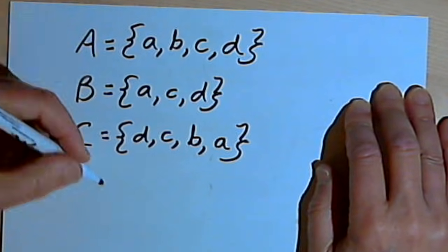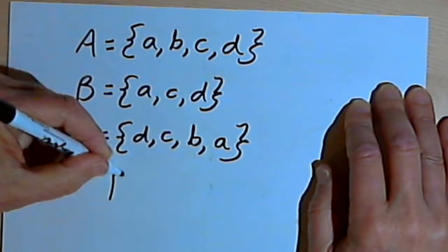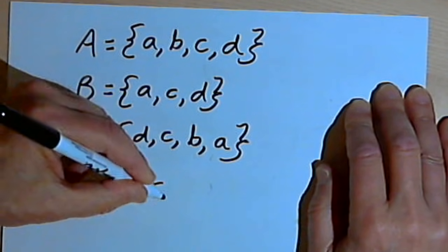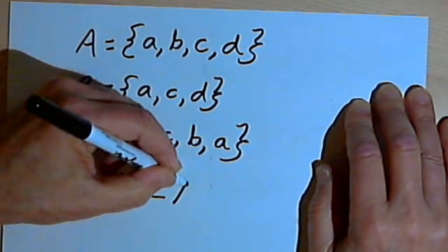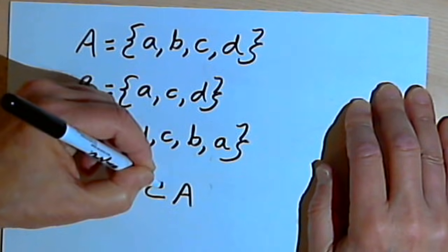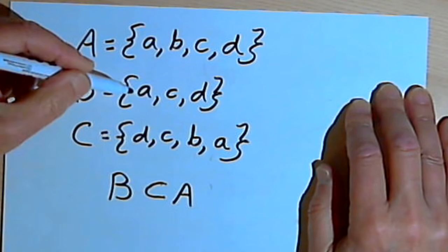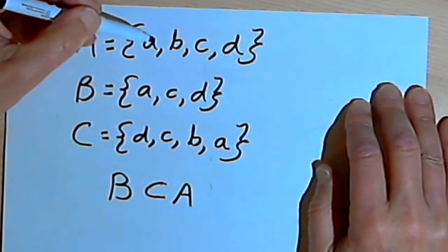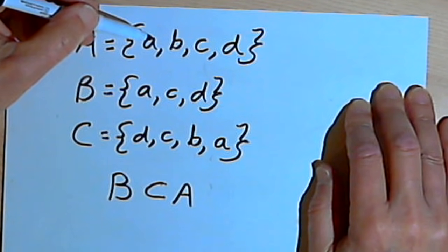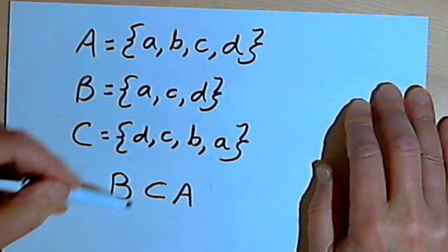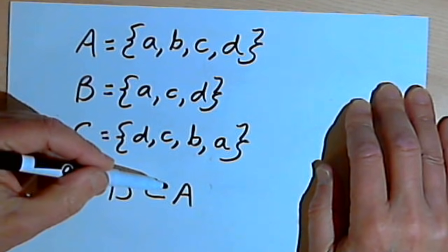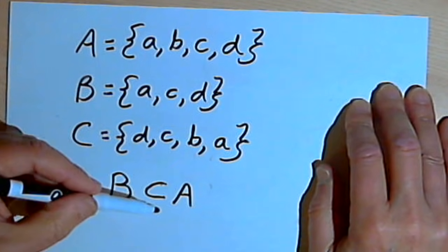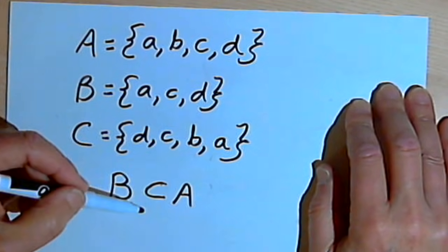Now, if a set doesn't have all of the elements found in the superset, then we can say that it's a proper subset. In other words, set B is a proper subset of set A, because set B has fewer elements than set A. The symbol for a proper subset is just a sideways U without a bar underneath.